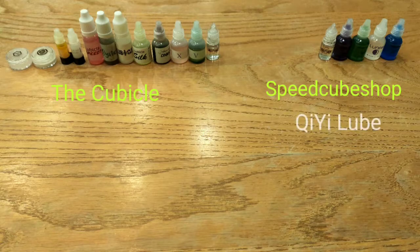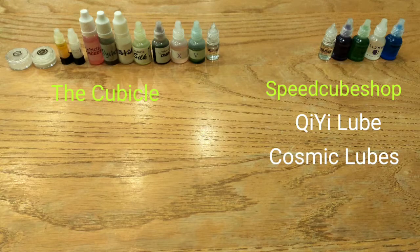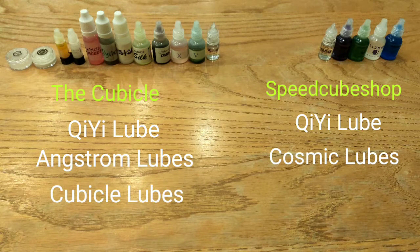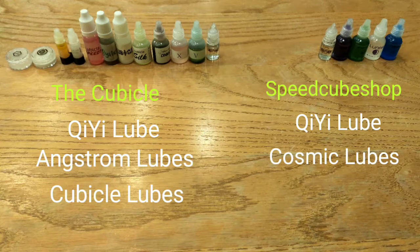Speedcubeshop sells chi-yi lube and the cosmic lubes. The cubicle sells chi-yi lube, the angstrom lubes, and the cubicle lubes. I think the cubicle has a better selection, so that is where we'll be focusing on.